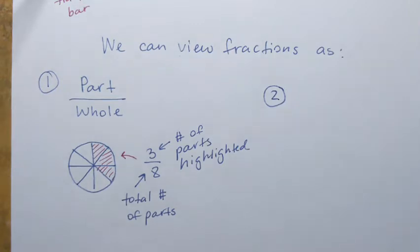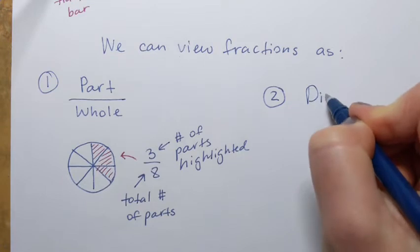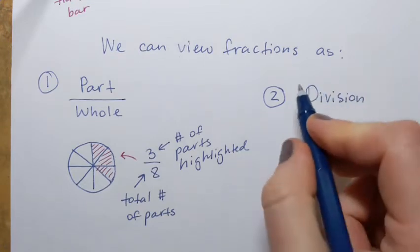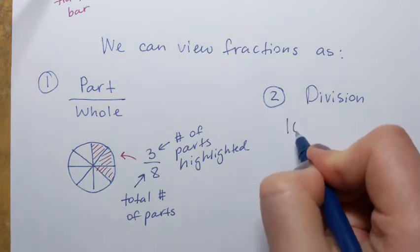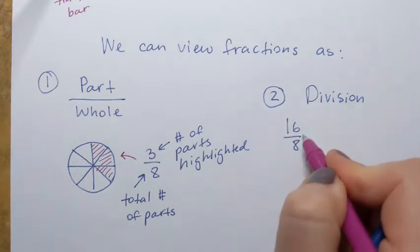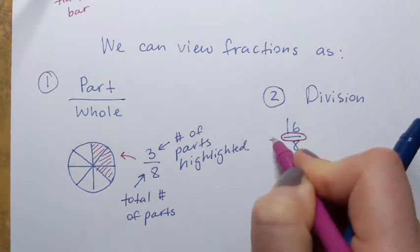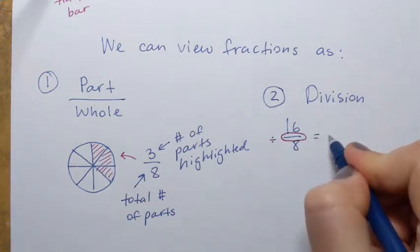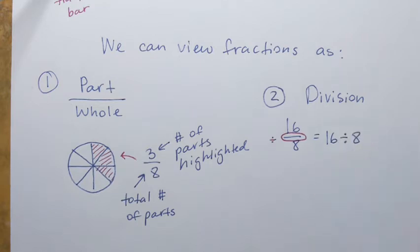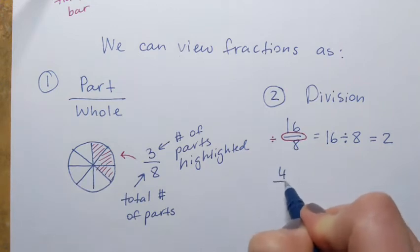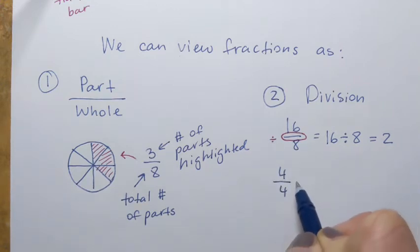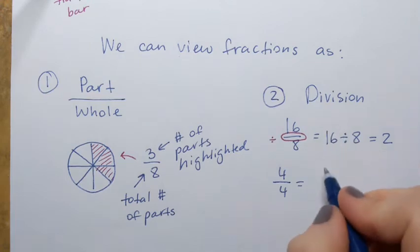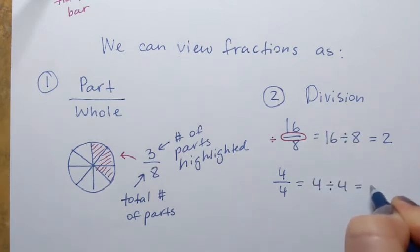The second way to view a fraction is in terms of the division operation. When I have the fraction 16 over 8, the fraction bar represents division, so that's the same as 16 divided by 8, which is 2. Also, if I have the fraction 4 over 4, since it represents division, I can treat it as 4 divided by 4, which equals 1.